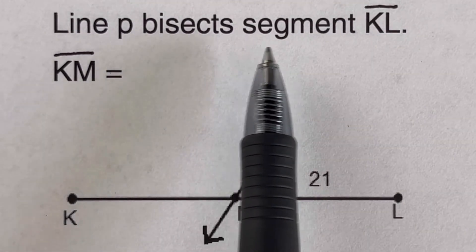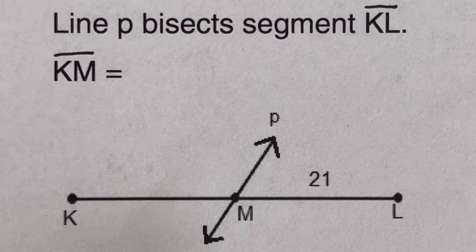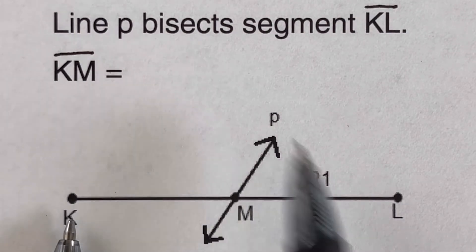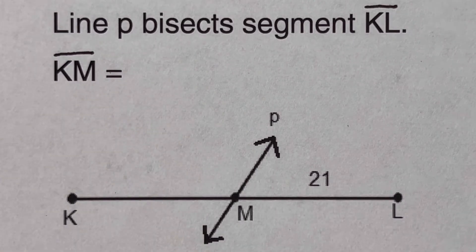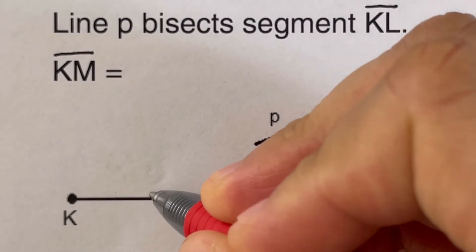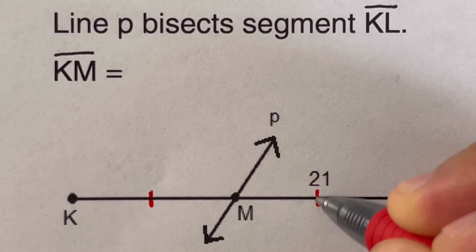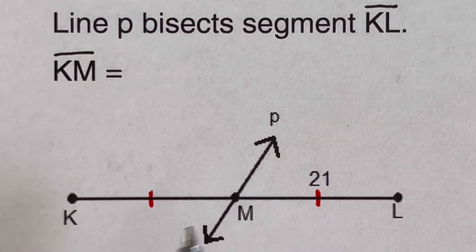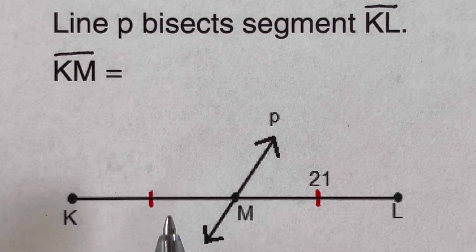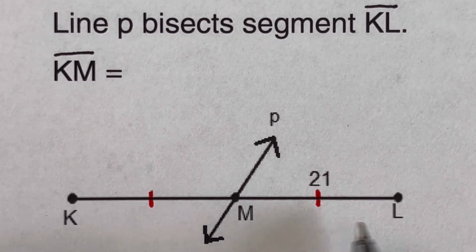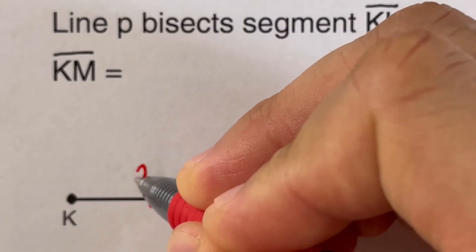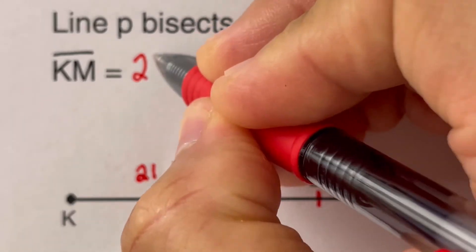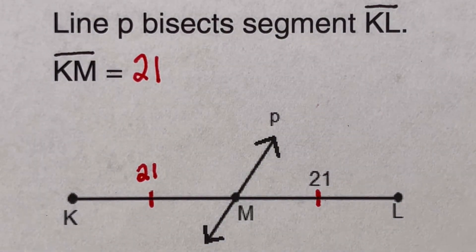Now let's look at some sample problems. In this problem, line p bisects segment KL. The word bisect means to cut or divide into two equal parts, so even if it's not labeled, we can say that KM is congruent to ML. Since ML is 21, KM is also 21.